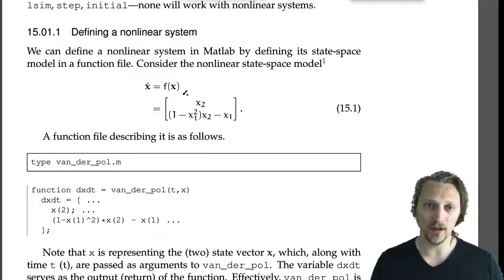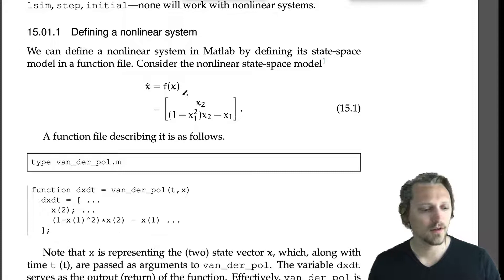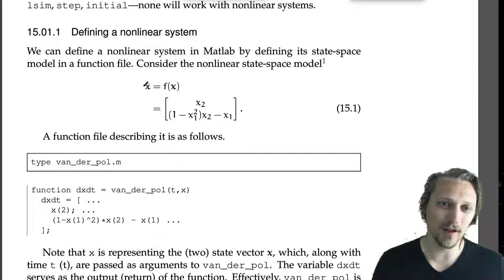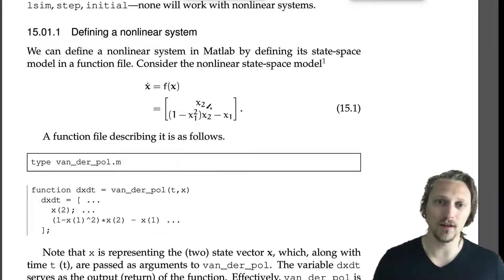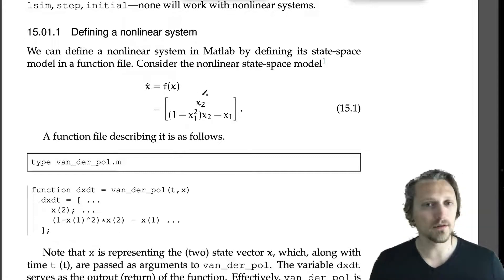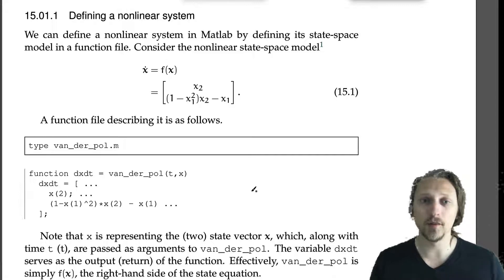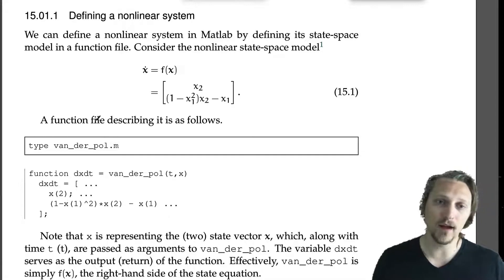This is a nonlinear state-space model state equation. X̄̇ equals—the right-hand side here is a vector-valued function of x₂ and x₁. So this is the second state variable and the first state variable, x₁ and x₂ and x₁. It's clearly nonlinear, and it's called a van der Pol equation.